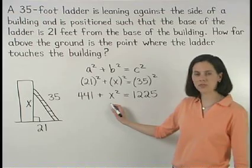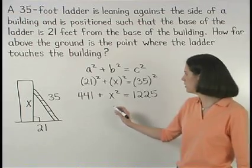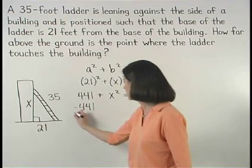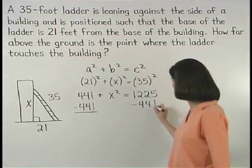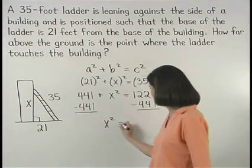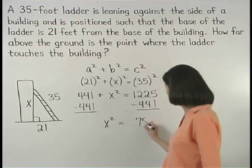Next, to get the x squared term by itself, we subtract 441 from both sides. And we have x squared equals 784.